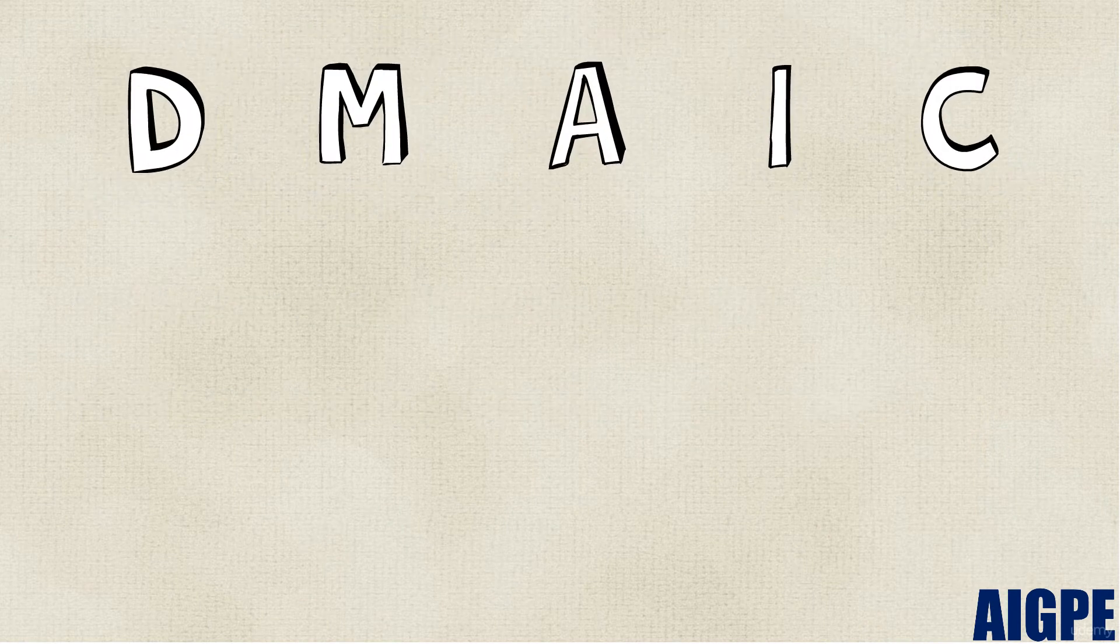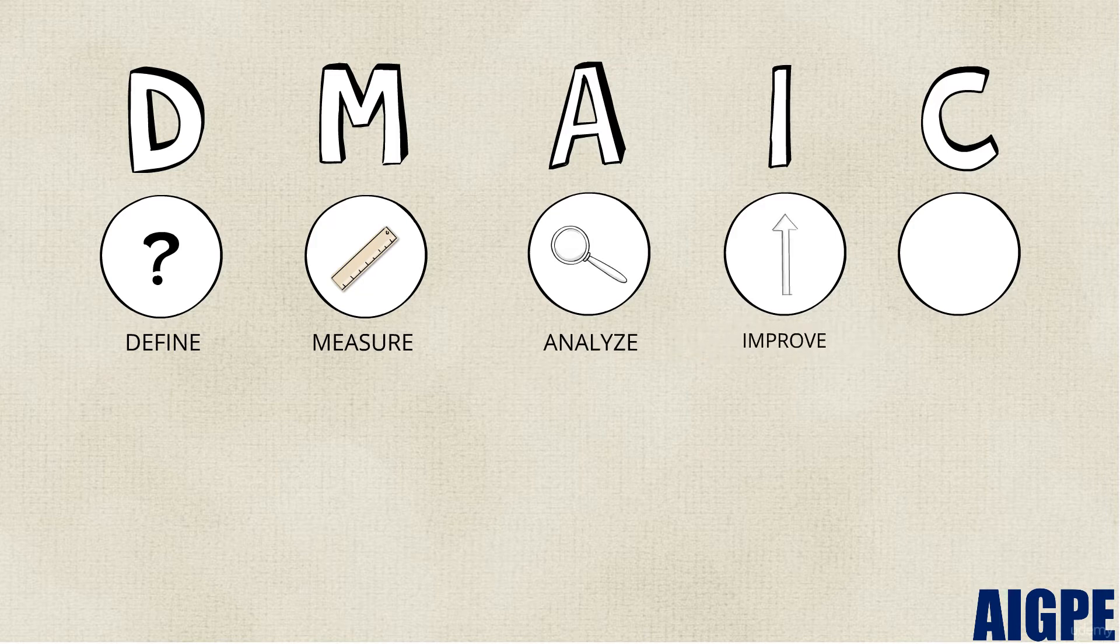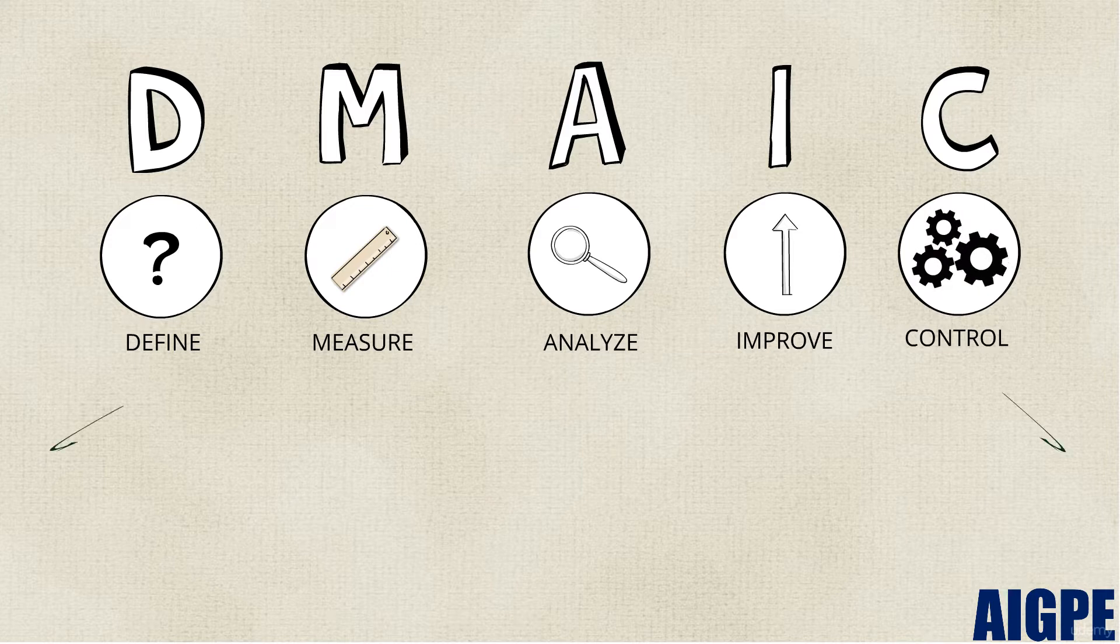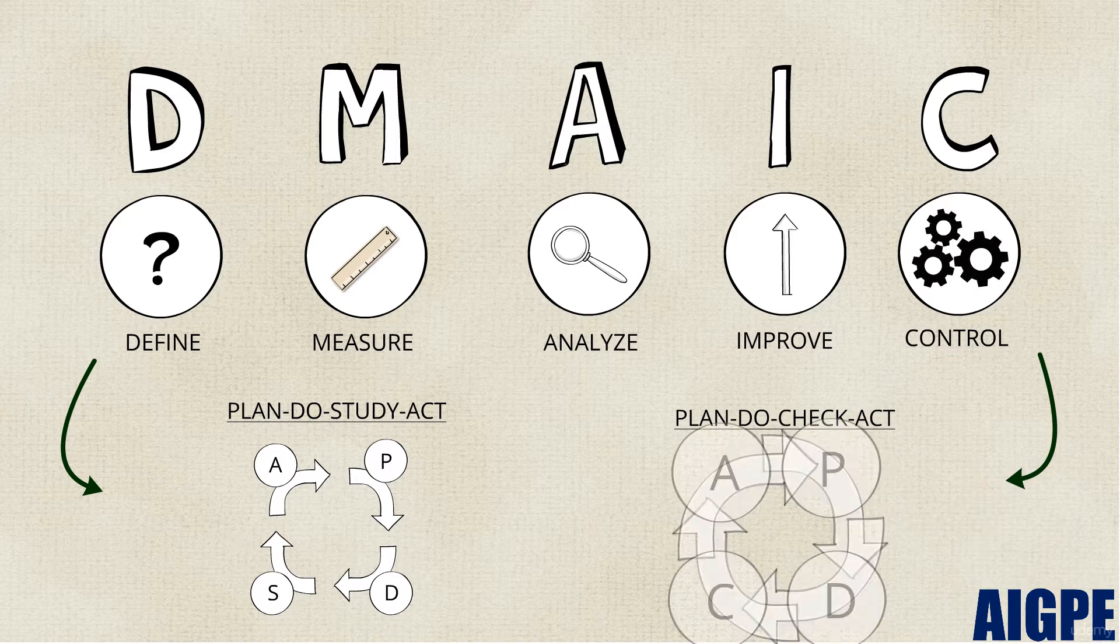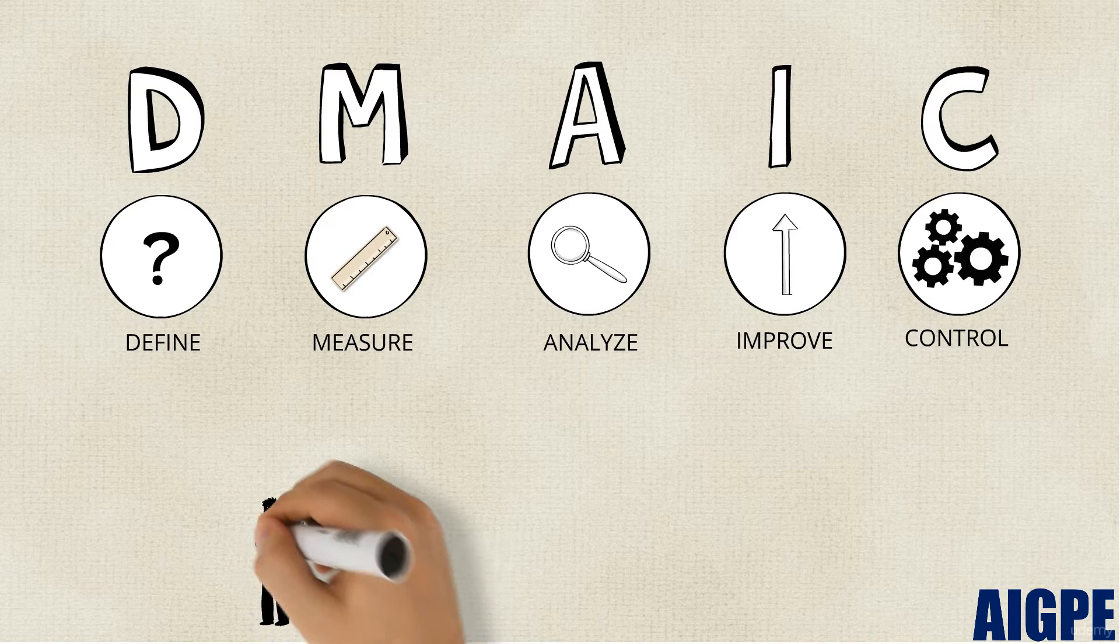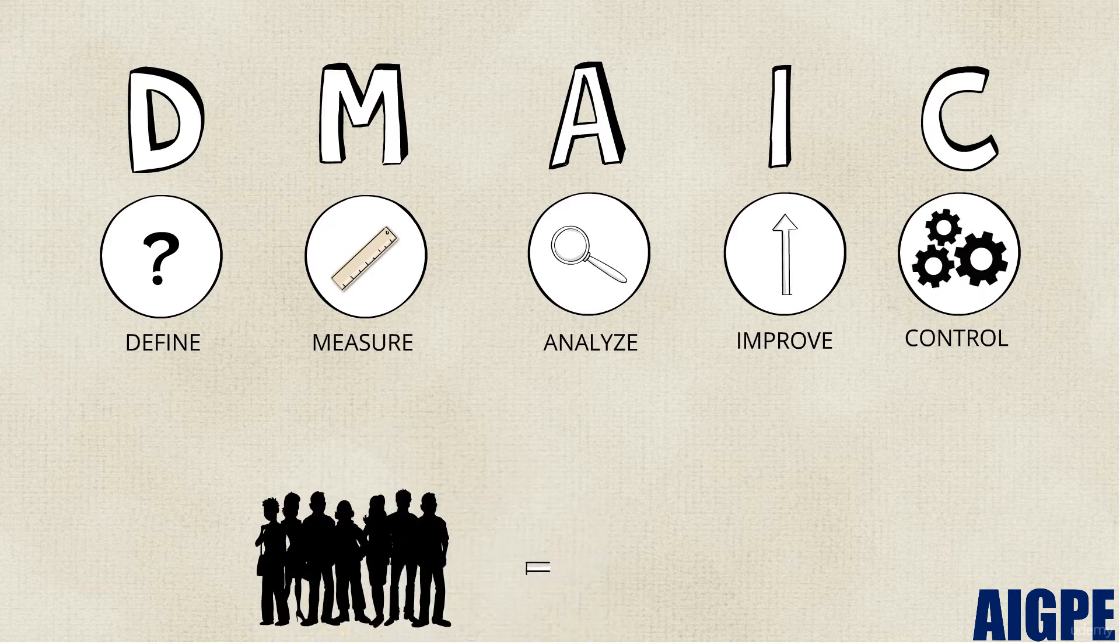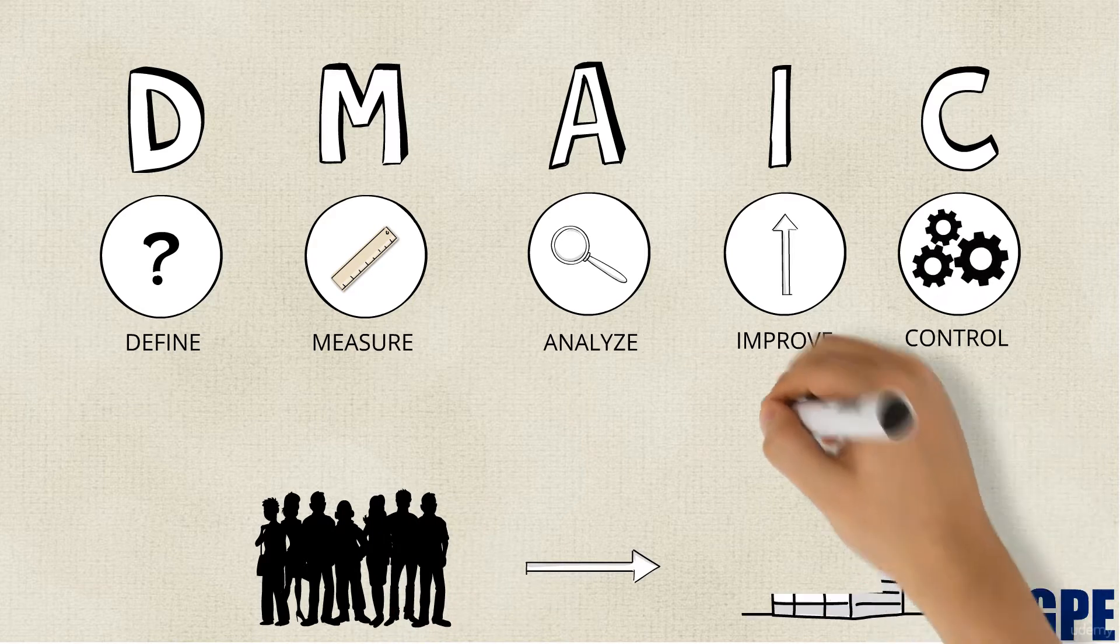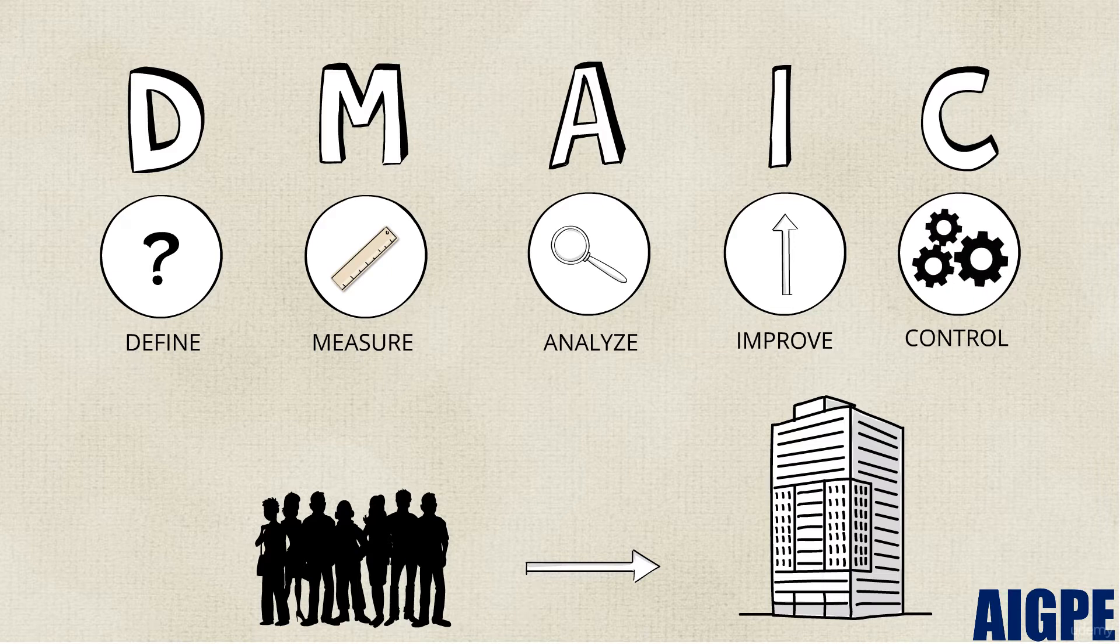The acronym DMAIC stands for Define, Measure, Analyze, Improve, and Control. It is very similar to the Plan-Do-Study-Act or Plan-Do-Check-Act model. Everyone in the organization will be asked to get involved with the Six Sigma model to look for continual improvement opportunities in their work areas.